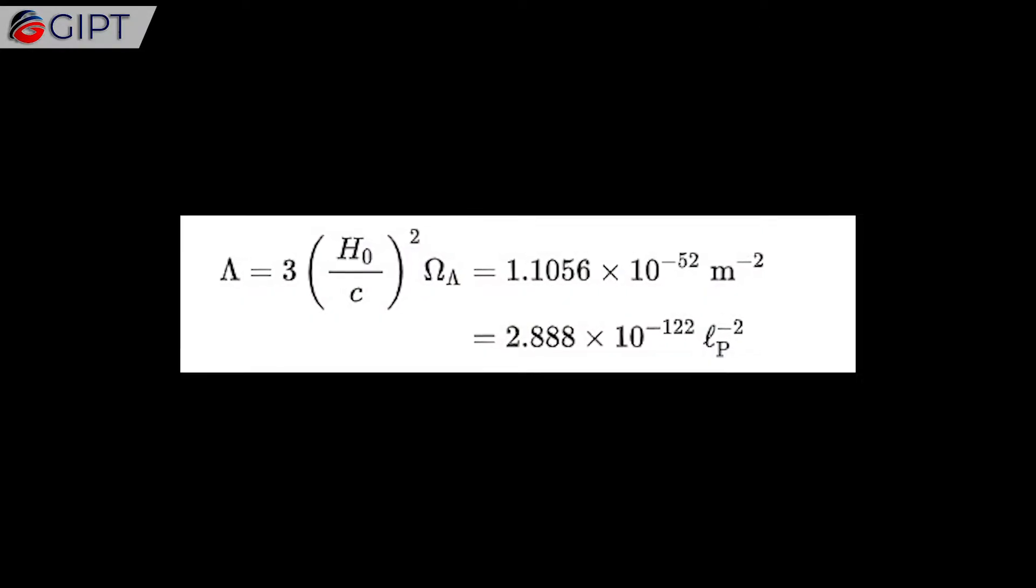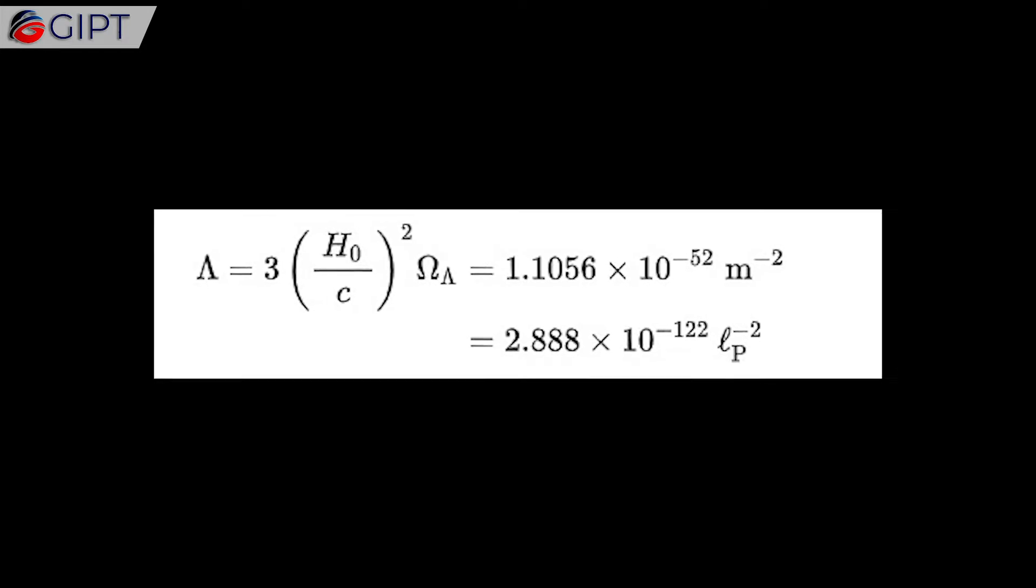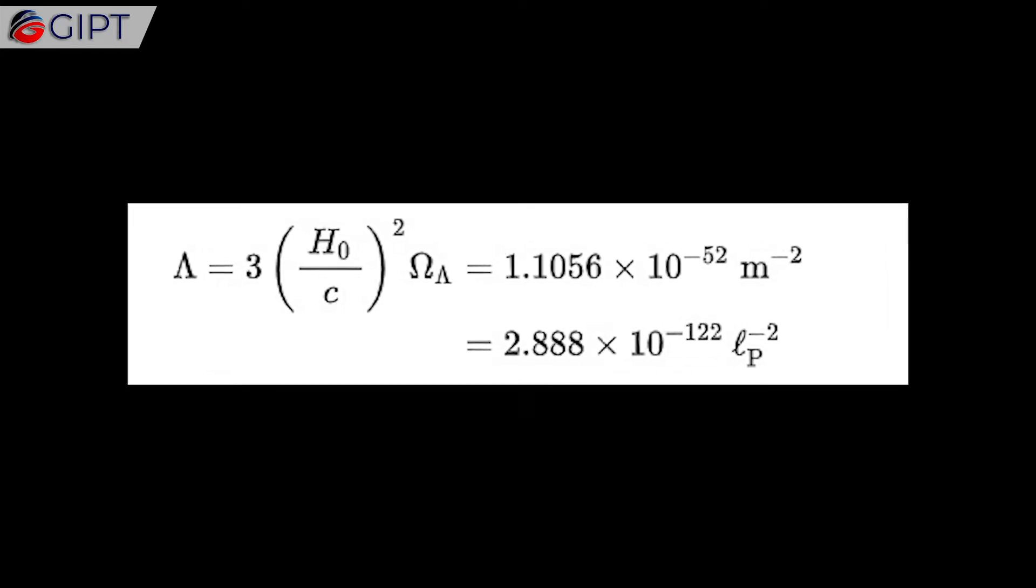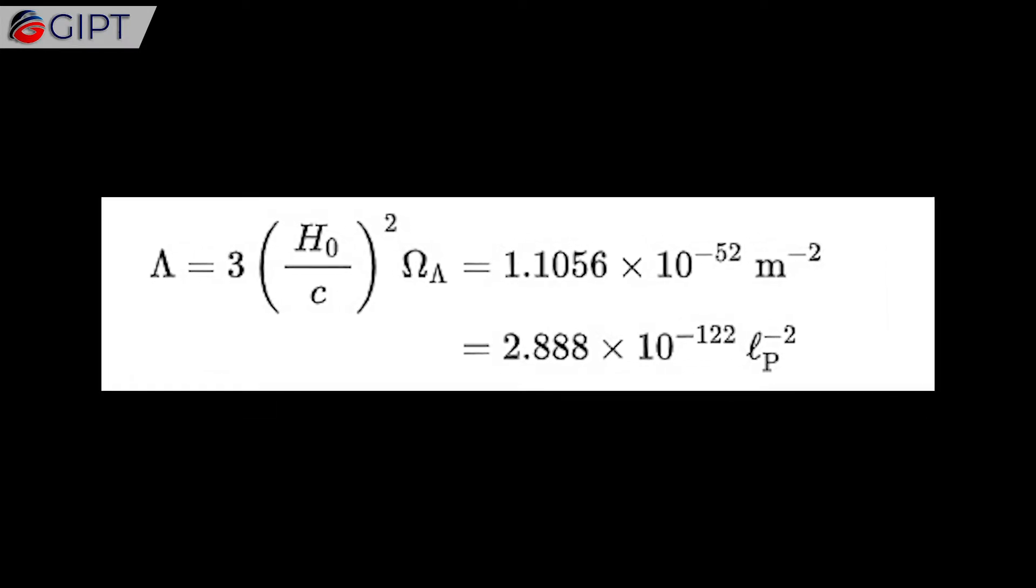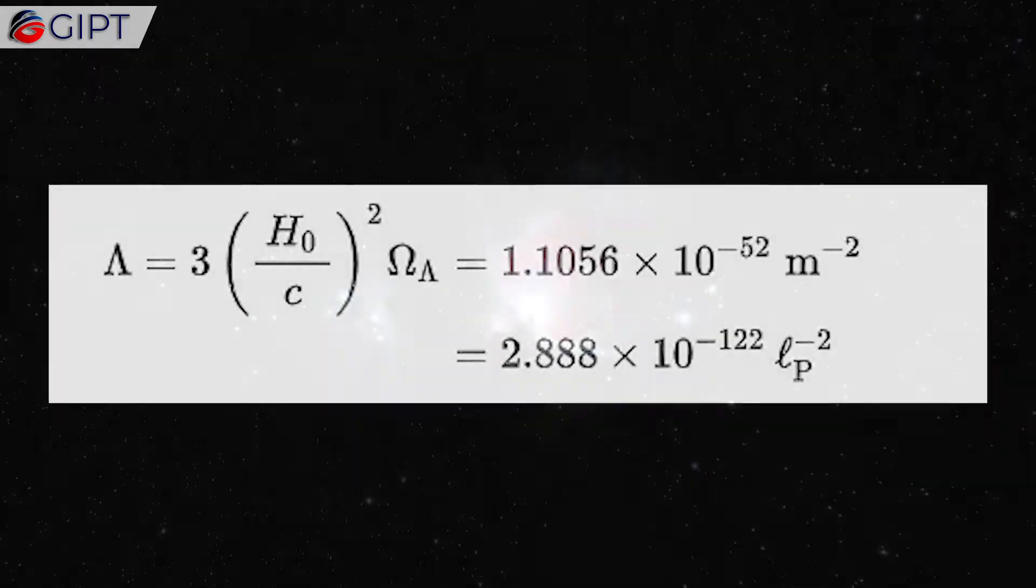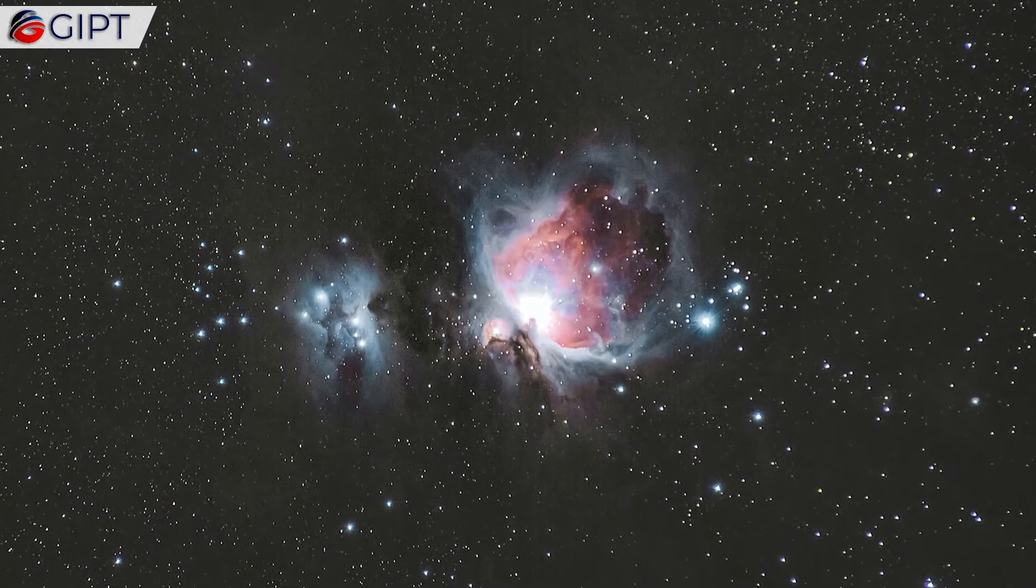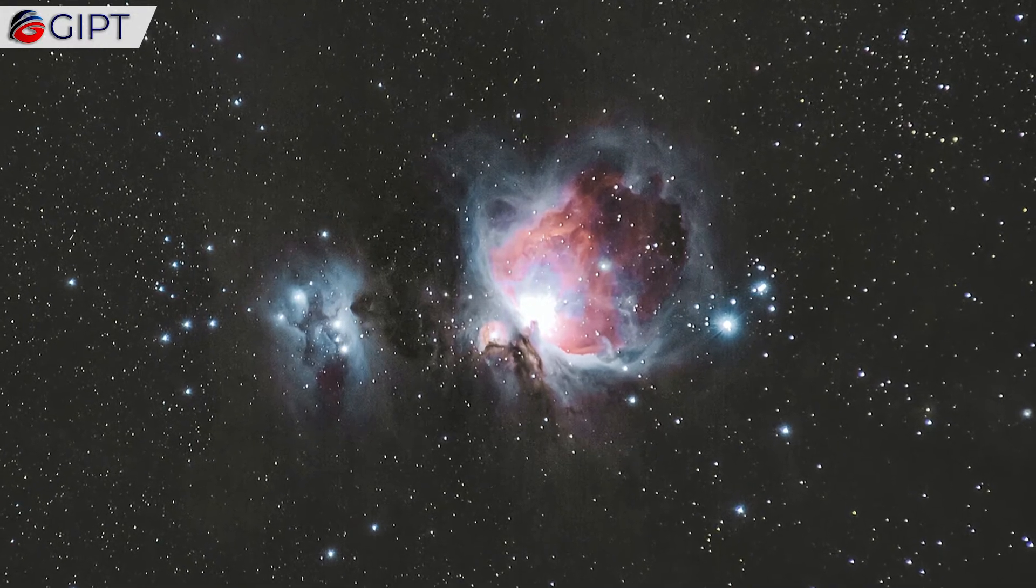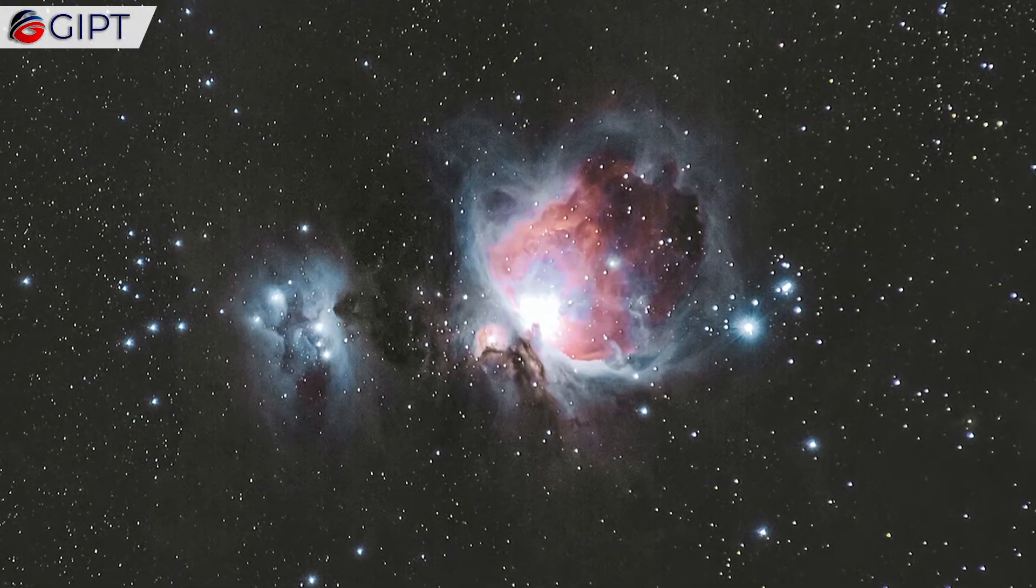But in order to get the math right, Einstein had to create a new constant number, an unchanging value like pi or e, and stick it inside his general relativity equations to balance them. He called it the cosmological constant, and it helped the equations account for the unchanging nature of the universe.